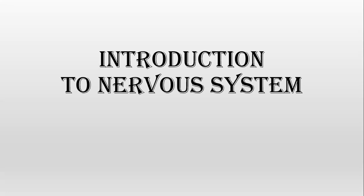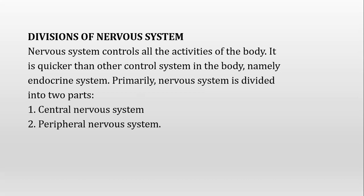Introduction to the nervous system. The nervous system is responsible for controlling all the activities of the body. As discussed in endocrinology, there are two main systems involved in coordination and regulation: one responsible for short-term regulation and the other for long-term regulation. The nervous system provides the first and quickest response, controlling almost all body activities, and is quicker than other control systems.